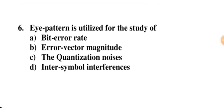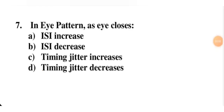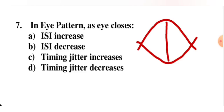Eye pattern is used for the study of inter-symbol interference. We apply the signal to a CRO, where a check pattern forms in the shape of an eye — that's why it is called the eye pattern. The best sampling time is where the eye opening is widest, meaning inter-symbol interference is minimum there. When the eye closes, ISI increases. So where the eye is closing, ISI is increasing.